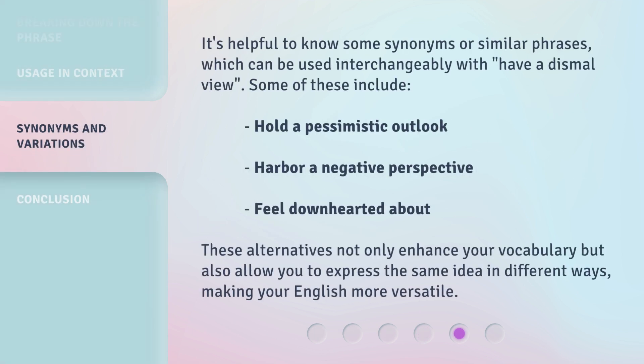It's helpful to know some synonyms or similar phrases which can be used interchangeably with have a dismal view. Some of these include: hold a pessimistic outlook, harbor a negative perspective, feel downhearted about. These alternatives not only enhance your vocabulary, but also allow you to express the same idea in different ways, making your English more versatile.